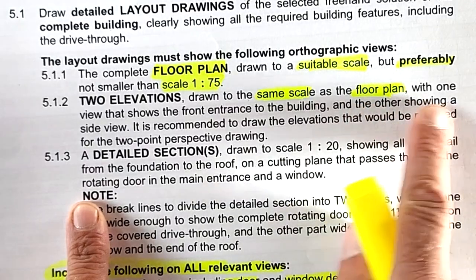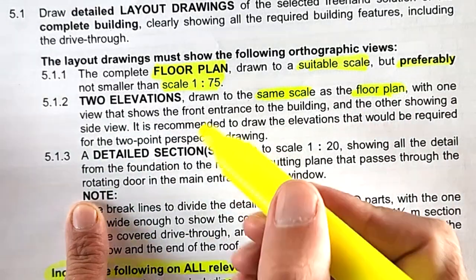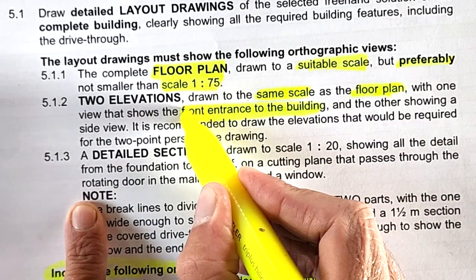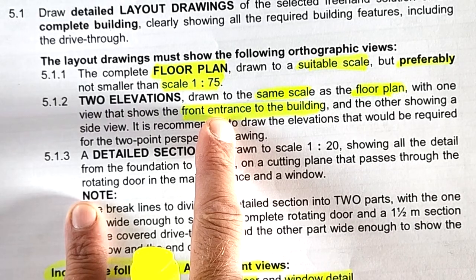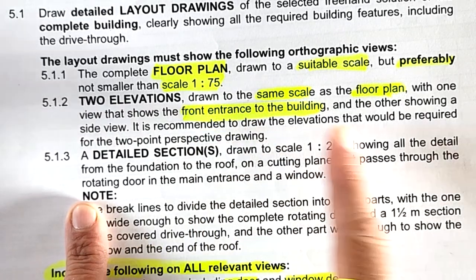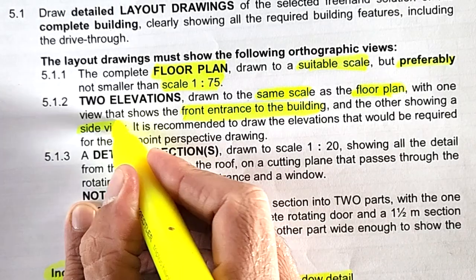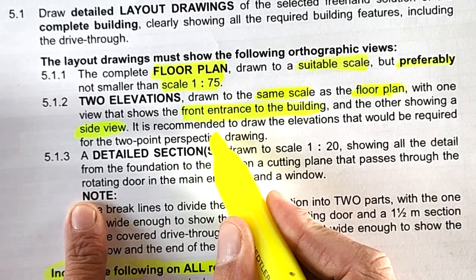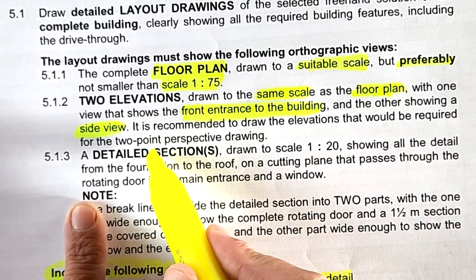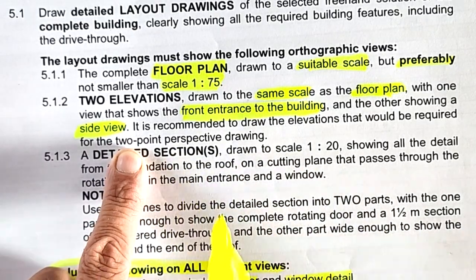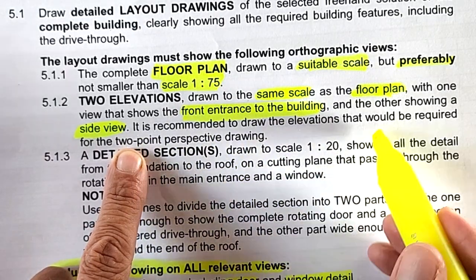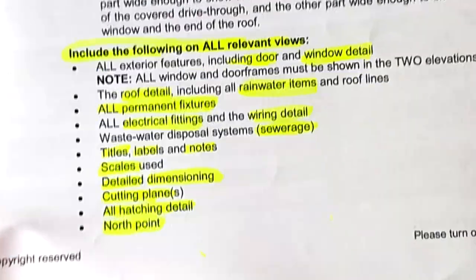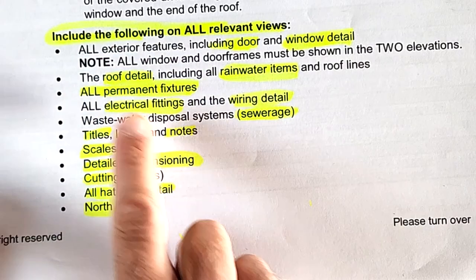One of the two views must show the front entrance to the building — your drop-off area, rotating doors, and entrance. The other must show the side view of the building. They don't specify which side, but a side view it is. It is recommended to draw the elevations that would be required for the two-point perspective drawing, so consider that the elevations you choose now will actually help you in that two-point perspective.